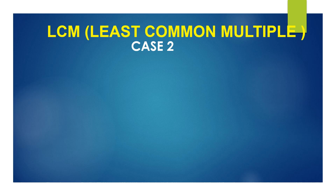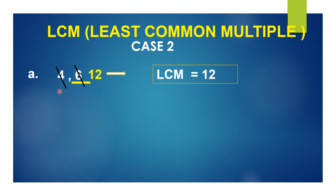Now Case 2 — finding the LCM of the given numbers. Consider 4 and 6. Identify the bigger number — it is 6. Is 6 divisible by 4? No. So we cross out 6 and write the next multiple of 6: 6×2=12. Is 12 divisible by 4? Yes — so cancel 4. The LCM of 4 and 6 is 12. A little extra step has been added here compared to Case 1.